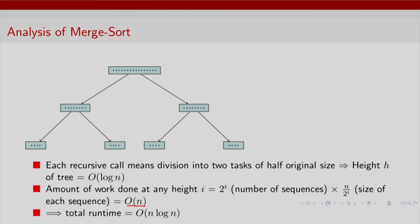Now how many such levels exist? Well, the number of levels is the height of the tree. It is order log N. So the total running time is therefore order of N log N.